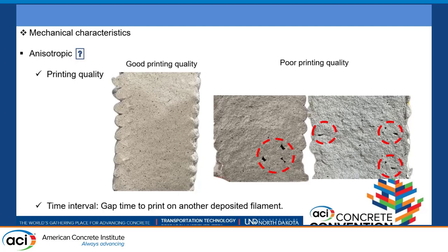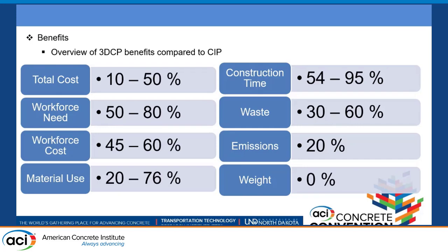It was reported that water-to-binder and sand-to-binder ratio of the ink used in this technology is lower than even typical mortar, which makes it more paste-like. As for mechanical characteristics, anisotropic behavior is a big issue in this technology, and printing quality and time interval have an effect on it. The reported benefits vary from total cost to workforce need, up to waste and emission, but advantages vary in different cases, indicating that the technology has different outcomes depending on the application.